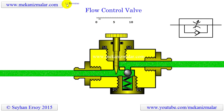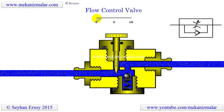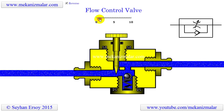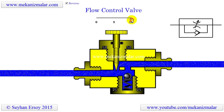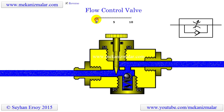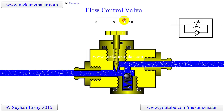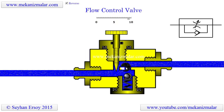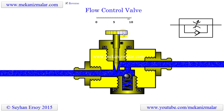On the other hand, the reverse flow goes over the check valve and needle valve combination. This prevents the fine-tuning of the return flow, since we do not have any control over the flow passing through the check valve openings.